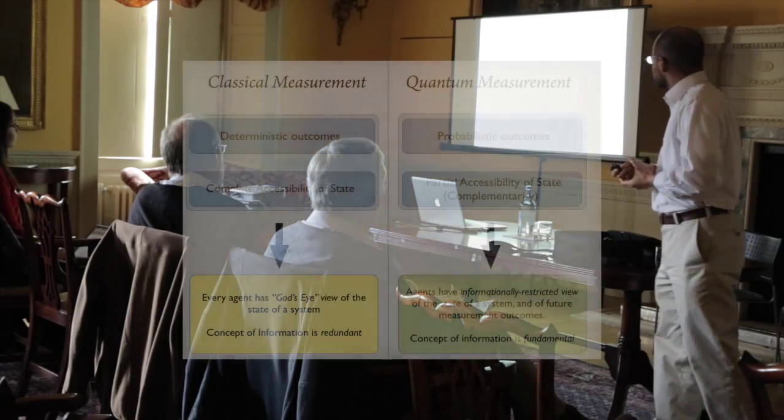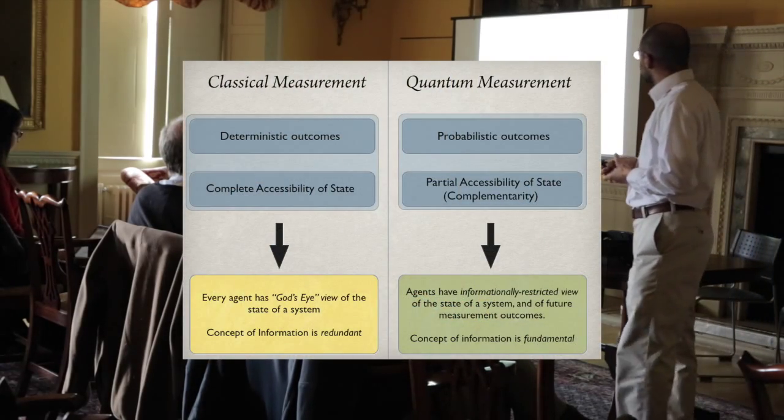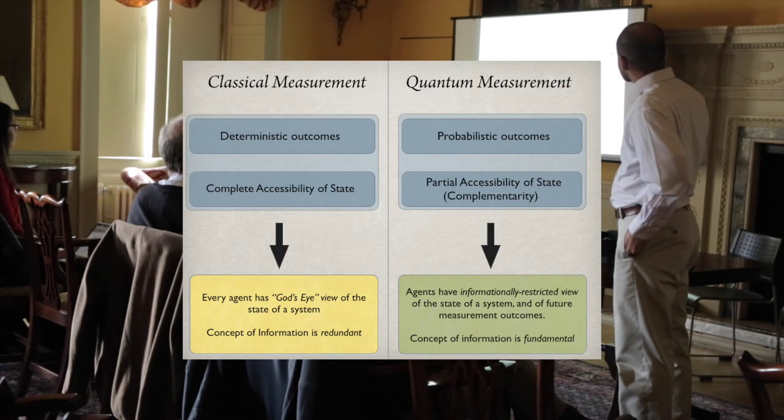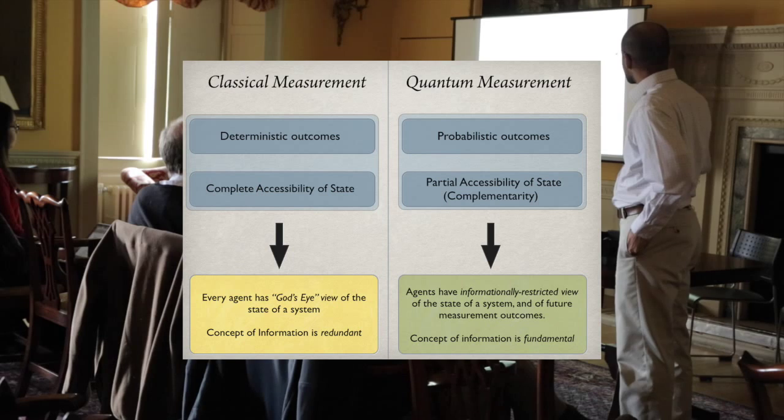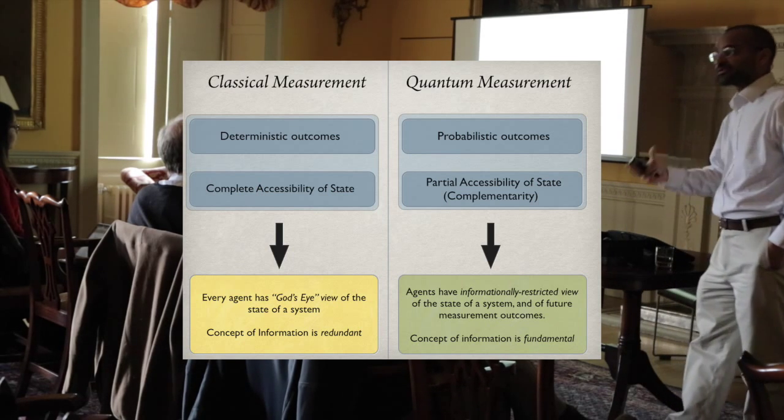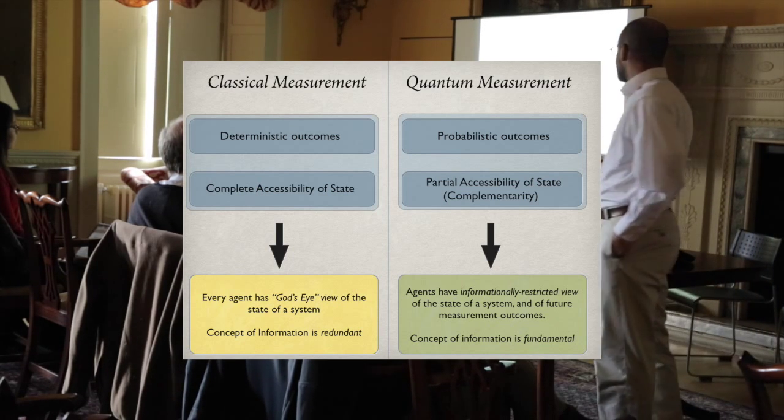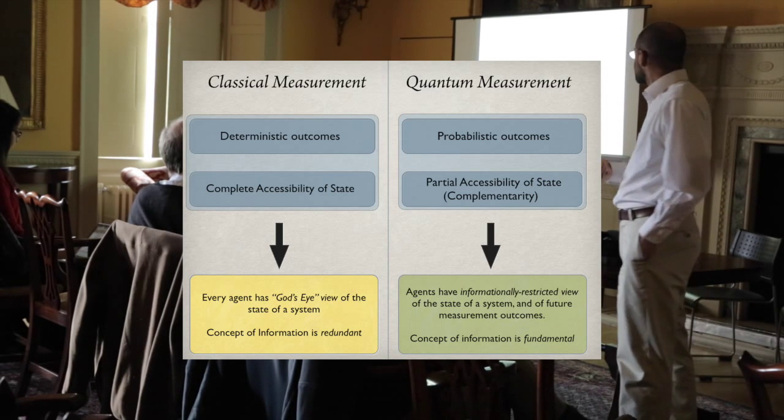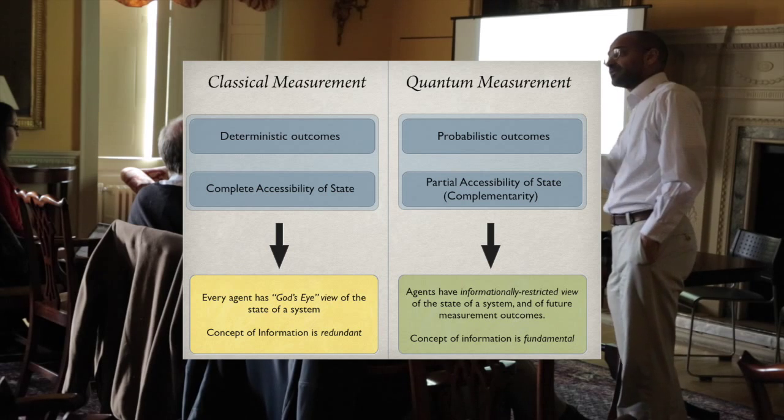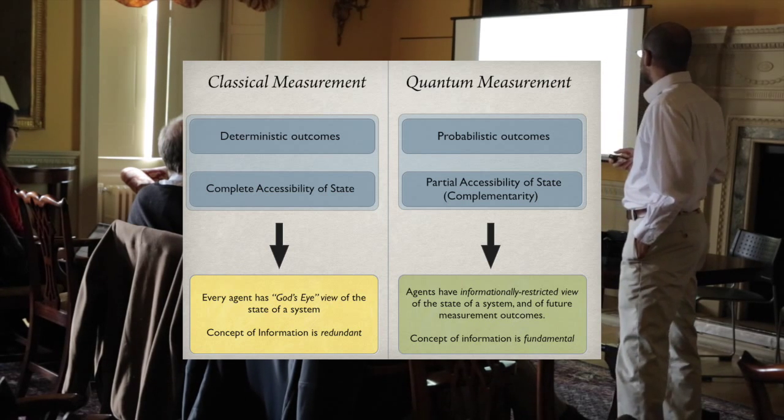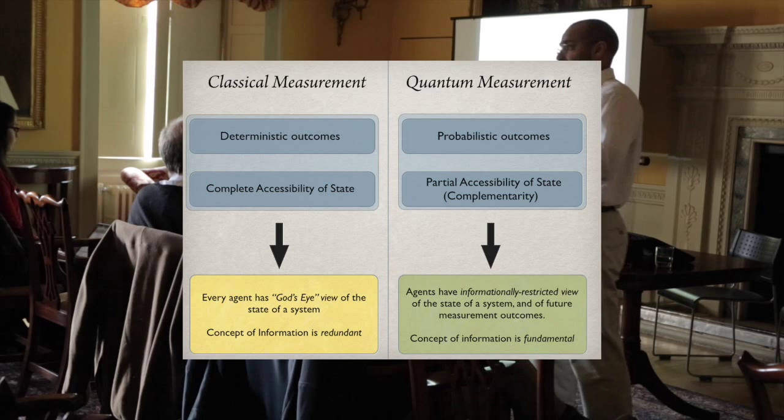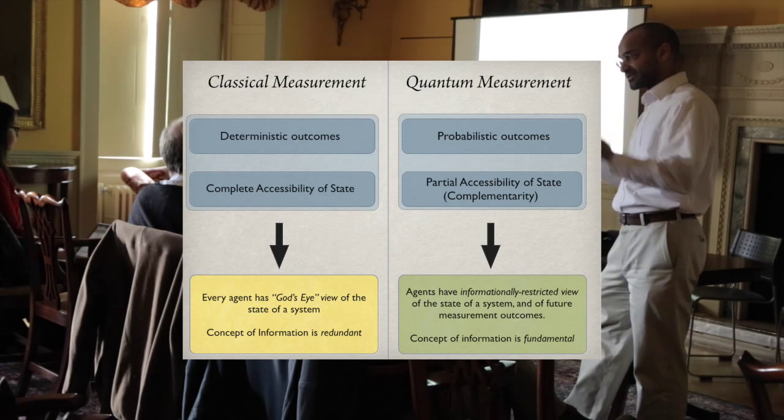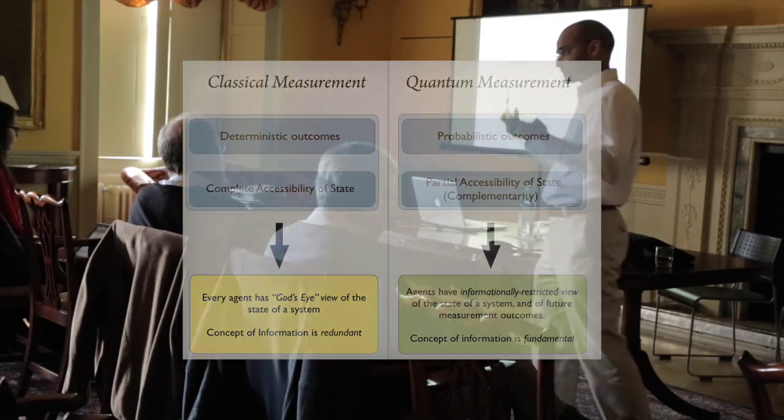We can contrast classical measurements with quantum measurements. Because of the probabilistic nature of outcomes and complementarity, agents - we're talking about ideal agents in quantum frameworks - have an informationally restricted view of both the state of the system and, given the state, of future measurement outcomes. Information is playing a very fundamental role. It's an absolutely natural concept, just as it is in our everyday folk conception of reality.